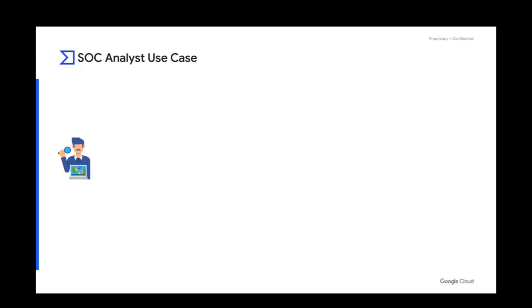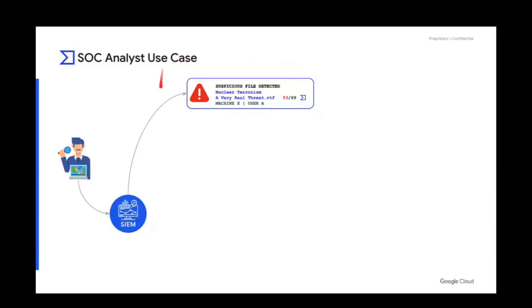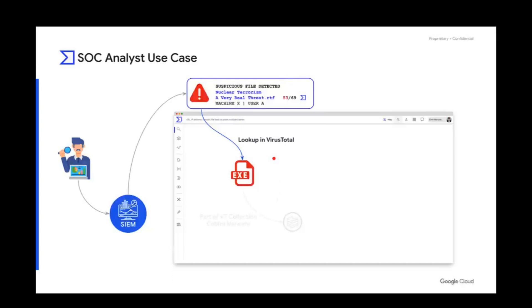Now we are ready to go through the use cases. Moving to the first use case, we have to situate ourselves in the security analyst position. This SOC analyst is using their SIEM to investigate potential security breaches in their infrastructure. He finds a suspicious file on an endpoint that is categorized as malware by 53 out of 69 antivirus vendors integrated in VirusTotal. The SOC analyst decides to look up the hash in VirusTotal to find more context, and sees that this file is part of a VT collection called Cobalt malware.